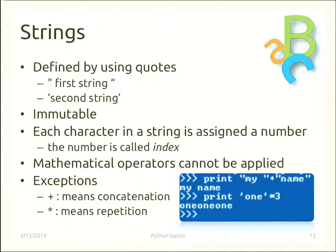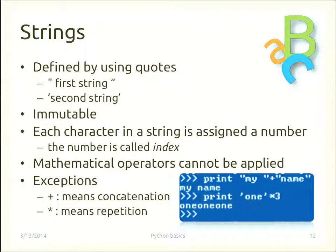We restart from strings. Strings in Python are defined using double quotes or single quotes — they are almost identical and you can use either. Strings are immutable: once you define a string, you cannot modify it. If you want a modified version, you must copy it into another variable and perform the operation during the copy. A string is a sequence of characters, and each character is assigned an index starting at zero.